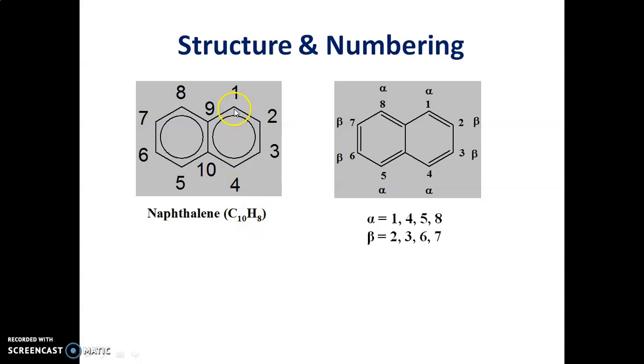Let us count the number of carbons: 1, 2, 3, 4, 5, 6, 7, 8, 9, 10. So there are total 10 carbons and 8 hydrogen atoms.